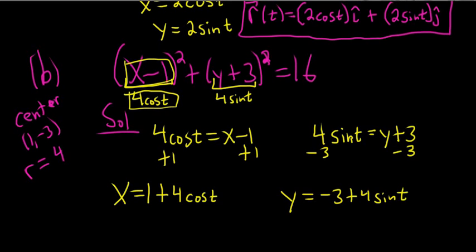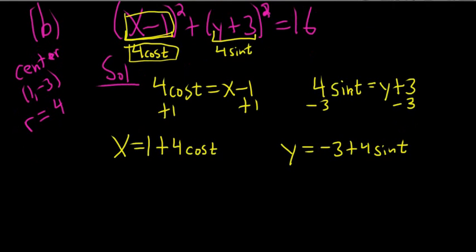And so now we can write down our vector value function. Before I do though, let me point out that there is a formula now. So if the center is h k, you can write this as h plus r cosine t. And over here you can write this as k plus r sine t. So these would be the parametric equations, right? Okay. So we're good.